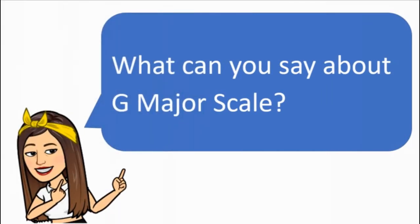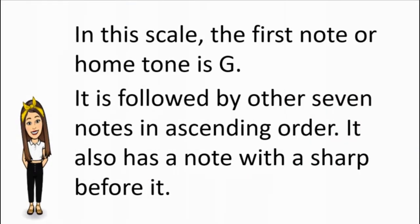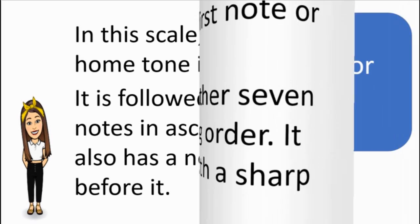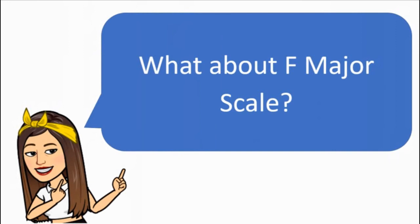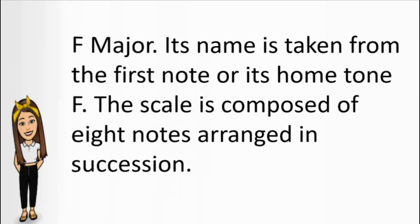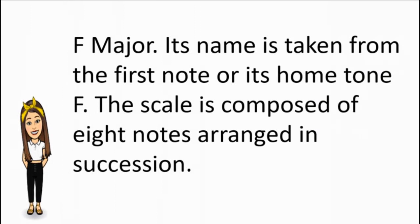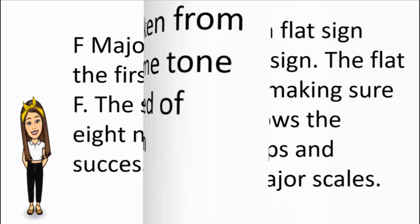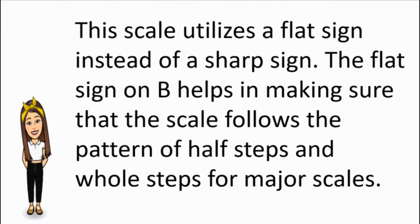What can you say about G major scale? Great! In this scale, the first note or home tone is G. It is followed by other seven notes in ascending order. It also has a note with a sharp before it. What about F major scale? Good job! F major — its name is taken from the first note or its home tone F. The scale is composed of eight notes arranged in succession. This scale utilizes a flat sign instead of a sharp sign. The flat sign on B helps in making sure that the scale follows the pattern of half steps and whole steps for major scales.